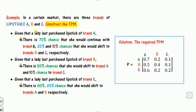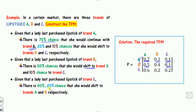Revisiting the lipstick brands example: with three brands A, B, C, construct the 3×3 TPM. Brand A: 70% continues with A, 20% shifts to B, 10% to C. Brand B: 50% shifts to A, some percentage to C, and the remaining to stay at B (calculated so the row sums to 1). Brand C: 60% and 20% for A and B respectively, and the remaining calculated similarly.